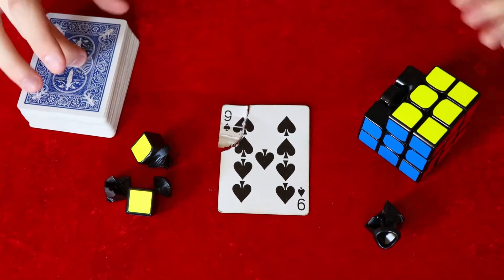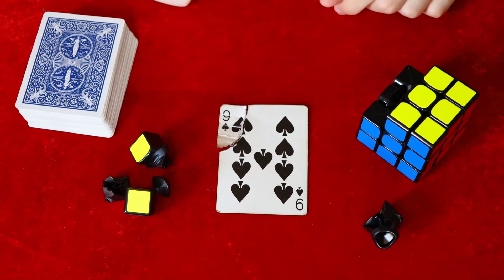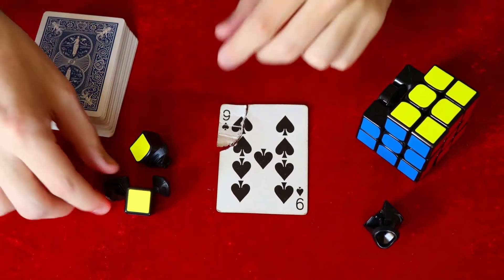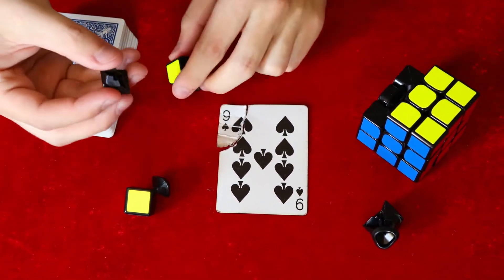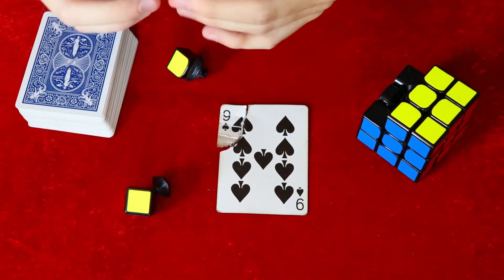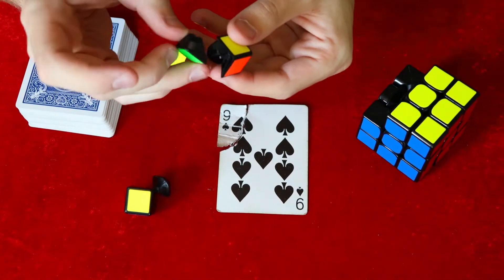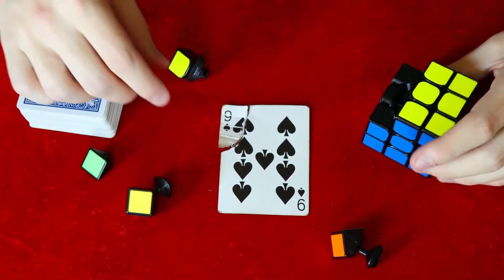For this, all you need is a normal deck of cards and a Rubik's cube like I have here. This is a speed cube that actually allows you to pull the pieces apart. I'm not sure if you could do this on a regular Rubik's cube, so you might have to do it a little bit differently.